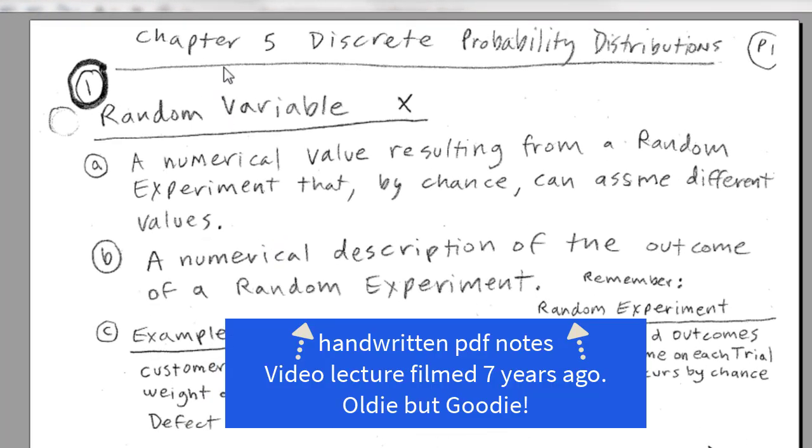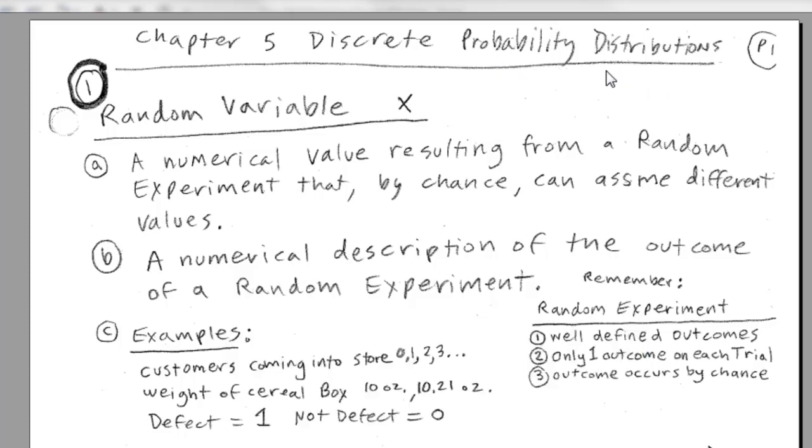We're in chapter 5, going to talk about discrete probability distributions. We already know a little bit about probability distributions, not only from chapter 3 when we did frequency distributions and relative frequency distributions, but also from last chapter. Now, we have to define some terms before we can jump over to Excel and create some probability distributions.